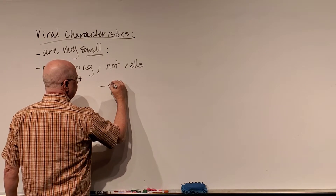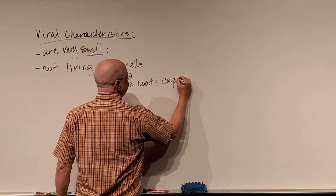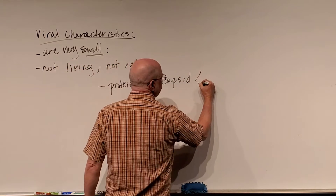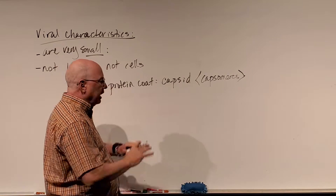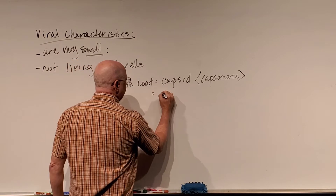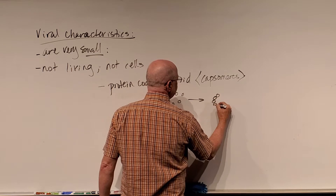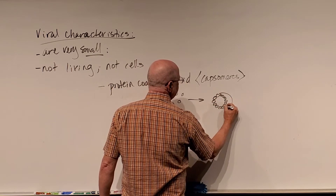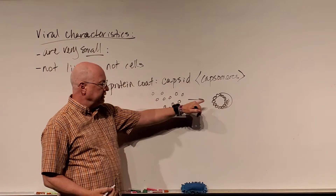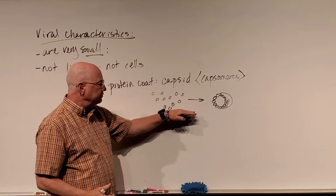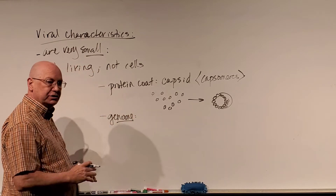Viruses are essentially made up of two or three things. There is a protein coat — an outer covering made almost entirely of protein called a capsid. The capsid is made up of smaller pieces called capsomeres. Capsomeres are individual subunit proteins that get assembled, and when I put a whole bunch of capsomeres together I get a capsid — some kind of outer covering that is three-dimensional.